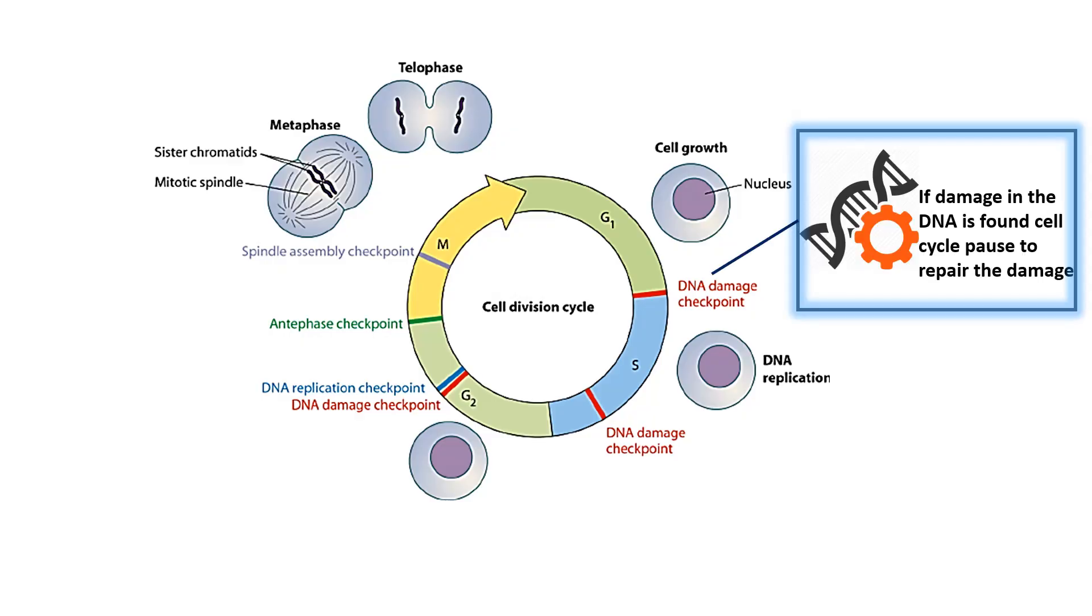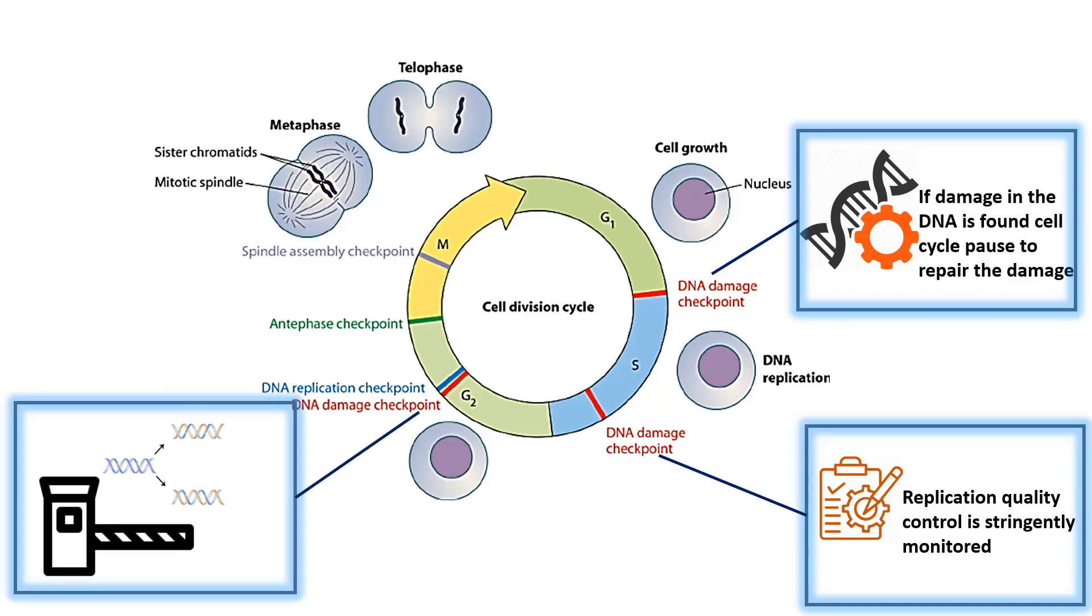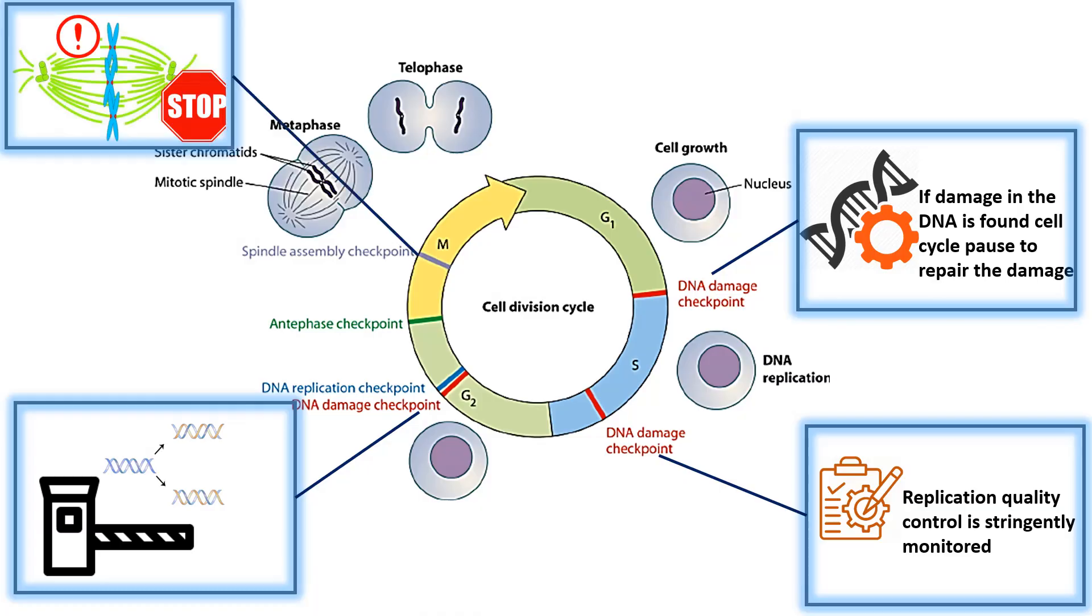The first checkpoint is the DNA damage checkpoint at the interface between G1 phase and S phase. The next checkpoint is the replication checkpoint which ensures the replication happens error-free. The third checkpoint is a DNA damage checkpoint at G2, which ensures that even if some errors are overlooked in the replication phase, they could be revisited and corrected. Another checkpoint is the G2/M checkpoint, which ensures that the packaged DNA in the form of metaphase chromosomes are properly segregated into the daughter cells.